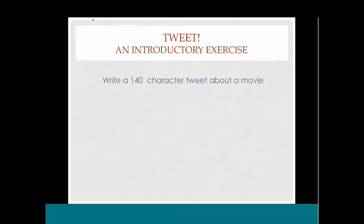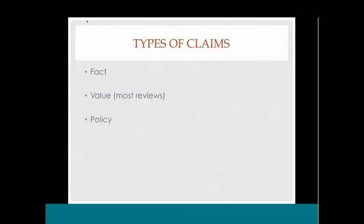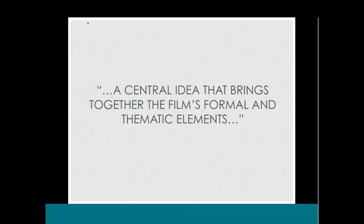As a kind of pre-activity, you could have students write a 140-character tweet about a movie, or give them a length requirement to warm them up. Now, before we look at the Star Wars review, I want to start with types of claims. If you have the second edition of Language of Composition, we talk about the Toulmin analysis — claims of fact, claims of value, and claims of policy. Any kind of review is nine times out of ten going to be a claim of value: it's good or it's bad, for this group, according to these criteria.